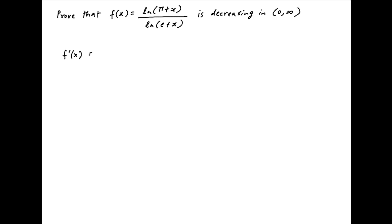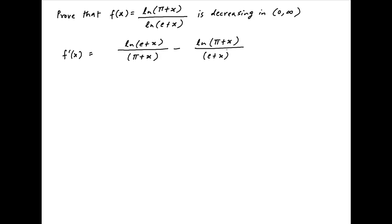f(x) will be a decreasing function on 0 to infinity if f'(x) is negative in that interval. f'(x) is equal to ln(e+x) times the derivative of ln(π+x), which is 1/(π+x), minus ln(π+x) times the derivative of ln(e+x), which is 1/(e+x), all of this divided by the square of ln(e+x).